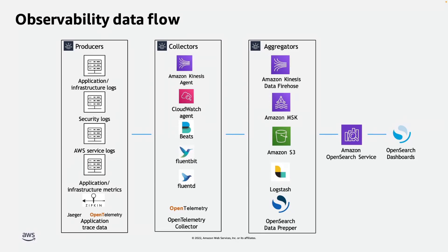Once you collect the data, you need to aggregate it before you store it into your Amazon OpenSearch Service for operational analytics. There are multiple ways. You can use Amazon Kinesis Firehose to deliver the data into Amazon OpenSearch. You can also use Amazon MSK or S3. Another popular open source option is Logstash, which can collect the data and do aggregation as well. The last one is OpenSearch Data Prepper, which is a community-driven open source data collector for processing observability data. It provides features like filter, enrich, transform, and aggregation. Once data is aggregated, you can deliver it to Amazon OpenSearch Service and build OpenSearch dashboards using the data in the cluster.